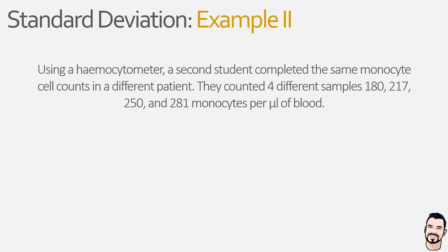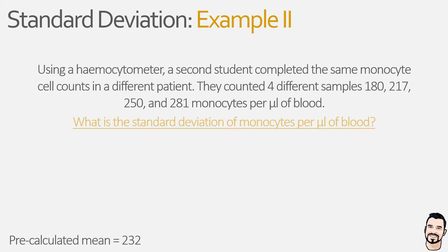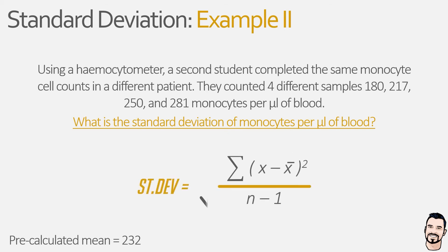Following this experimental counting, the student calculated the mean to be 232 cells and now wants to know how dispersed their data is, i.e. what is the standard deviation of monocytes per microlitre. Just like our previous example, we are going to calculate the sample standard deviation using the following equation, which we can now populate with all of the information from our example.